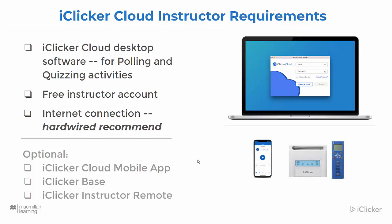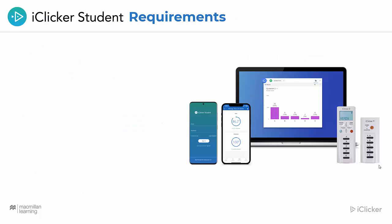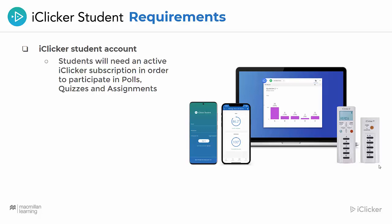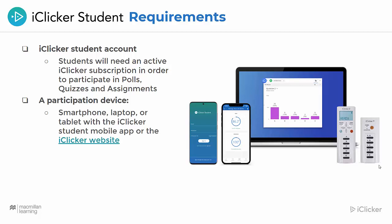You'll also have the option to use an iClicker instructor remote to control your presentation. Here's what your students will need to participate with iClicker. Be sure to communicate early to your students what devices you'll allow in class and what they need to do to be ready to participate. Students will need an iClicker student app account. All new student accounts include 14 days of free access. After that period, students must purchase a subscription or enter an access code unless your institution has a site license. Students will need a participation device — a smartphone, laptop, or tablet — with the iClicker student mobile app or the iClicker student website. These options require robust classroom Wi-Fi. Students can also use iClicker remotes if you allow them, and a subscription or access code is not required for students participating with physical remotes. iClicker remotes also work without Wi-Fi as long as the iClicker instructor base is plugged in.